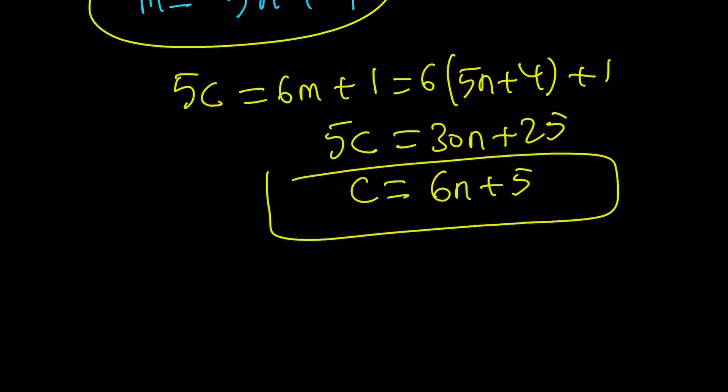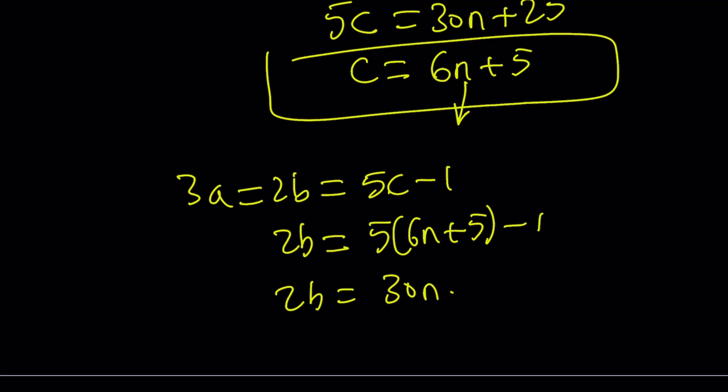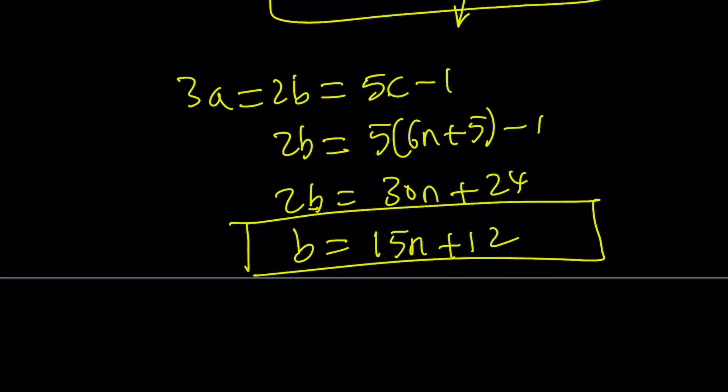So how do you do that? Well, remember, we had 3a equals 2b, and that was equal to 5c minus 1, and that was equal to 6m. So whatever you want to use here doesn't really matter. You can use m or c. Let's just use c. Forget about m. Since c can be written like this, I can go ahead and plug it in. 2b equals 5 times 6n plus 5 minus 1. And 2b equals 30n plus 25 minus 1, which is 24. Or divide everything by 2. You get b equals 15n plus 12. That is the value of b. And to find a, you can just divide this by 3. Because remember, 3a is equal to 2b. So by dividing, you can get the a, 10n plus 8.